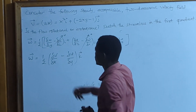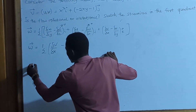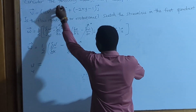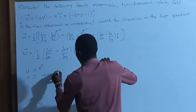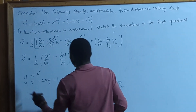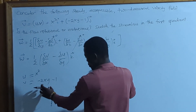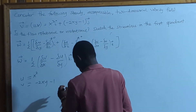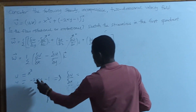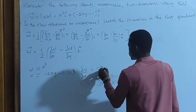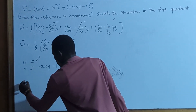Let's write it in the u and v components. Our u component is x squared, and our v component is equal to minus 2xy minus 1. We need the partial differential of v with respect to x, so we differentiate v with respect to x, which gives us minus 2y.